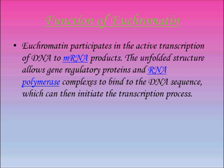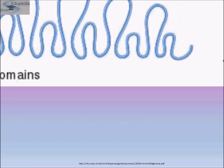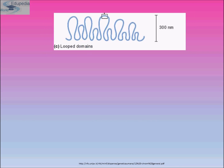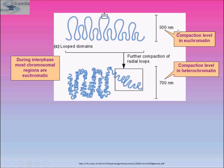Variation causes heterochromatin to encroach on adjacent genes or recede from genes at the extremes of domains. Transcribable materials may be repressed by being positioned at these boundary domains, giving rise to expression levels that vary from cell to cell — this is position effect variegation. The compaction level of euchromatin is about 300 nanometers (looped domains), while further compaction of radial loops in heterochromatin is about 700 nanometers in diameter.